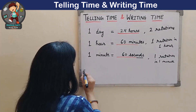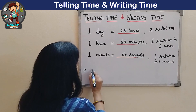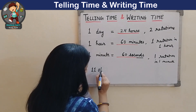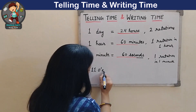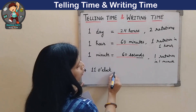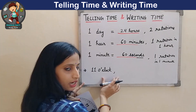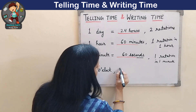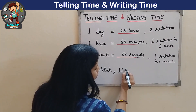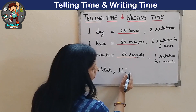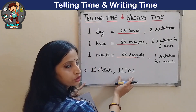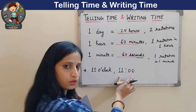We will write it like this: 11, then O, comma, then clock — 11 O'clock. Or in digital form, we write the time as 11, then 2 dots or colon, then 2 zeros: 11:00. So it is 11 O'clock.